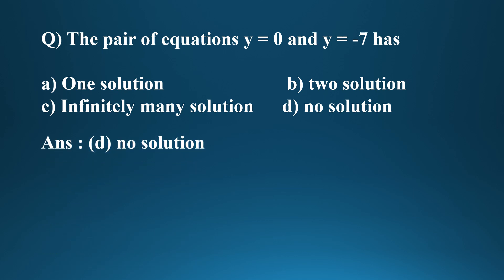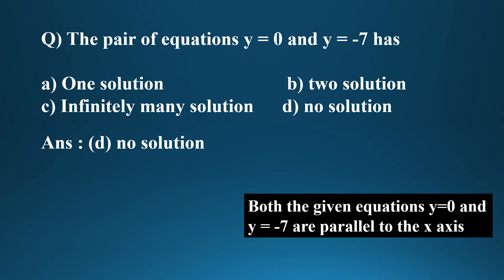The pair of equations y = 0 and y = −7: since both are lines parallel to the x-axis and distinct, they are parallel to each other and do not intersect.